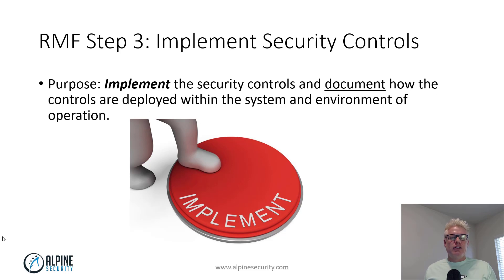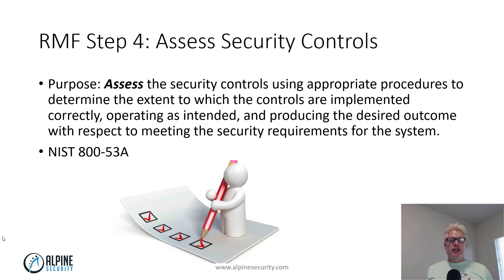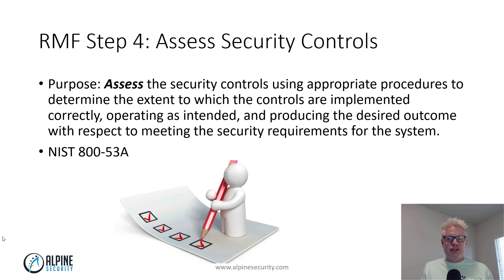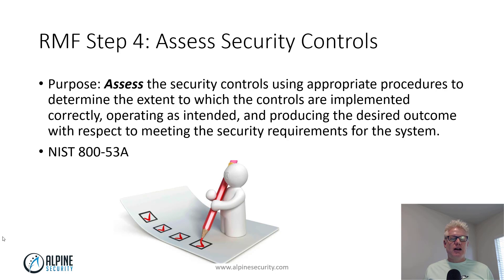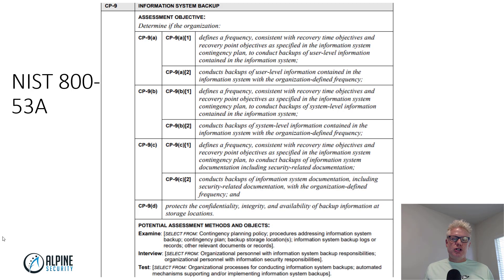Step three is very simple: you implement the controls that you chose in step two, and you also document how you implement them. Step four, you assess the controls. You've categorized the system, chosen some controls, and implemented them — now you want to assess those controls to see if they're actually implemented as intended and producing the desired results. Are they actually reducing the risk? This is a very important step. A companion guide to NIST 853 is NIST 853A, which gives you guidance on how to assess the controls you chose.